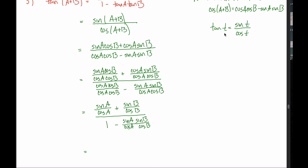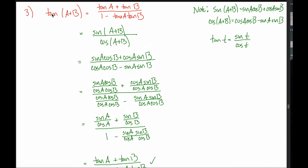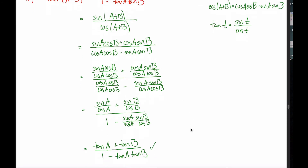One more time, we take advantage of the fact that tangent of an angle equals sine of that angle divided by cosine of that angle to rewrite these terms. Sine of a over cosine of a is tangent of a. Sine of b over cosine of b is tangent of b. In the denominator I still have the one, and then sine of a over cosine of a gives tangent of a, multiplied by sine of b over cosine of b, which is tangent of b. What I'm left with is exactly what I was hoping to get — the tangent angle addition formula.